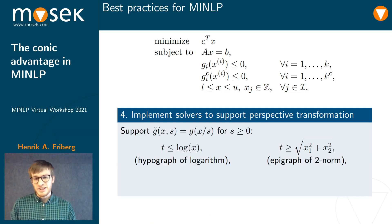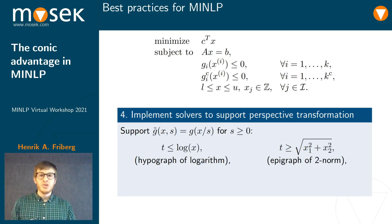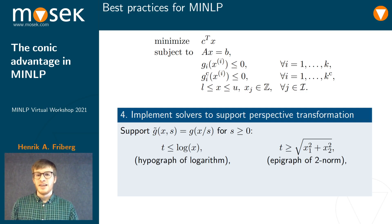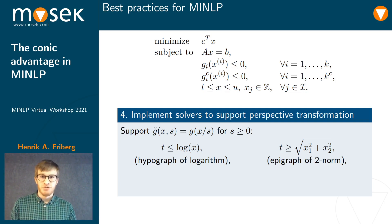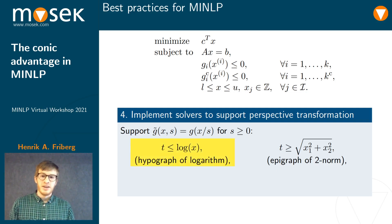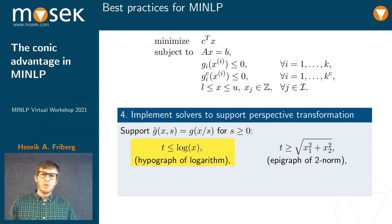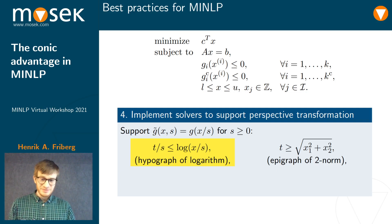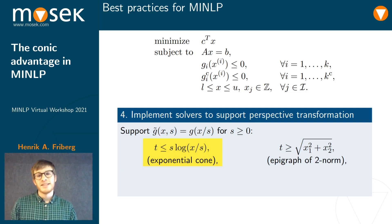Going into the details, if you want to support the perspective transformation, you need the variant of the atom which is homogeneous – that is, in which all variables are scaled by a non-negative factor. In the case of the hypograph of the logarithm, we would be scaling each variable by a perspective variable S, and if we rearrange this, we can recognize it as an exponential cone.